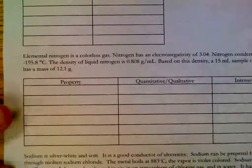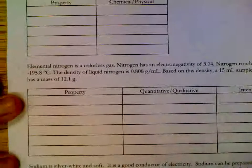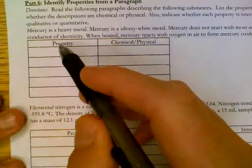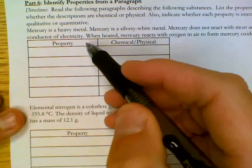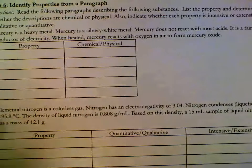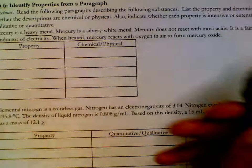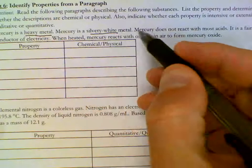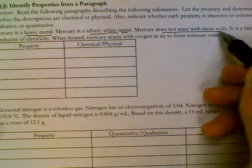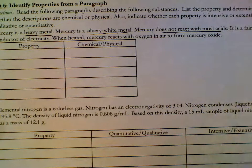Page 2. We're going to read these paragraphs to find properties. So what we should do is underline descriptions of each substance. Mercury is a heavy metal. So it's describing mercury. Silvery white metal. Describes mercury. Does not react with most acids. Describing mercury.